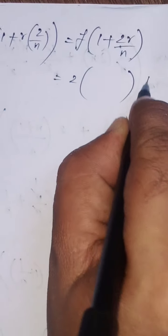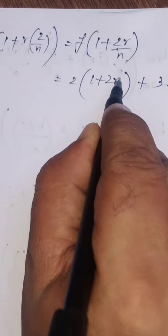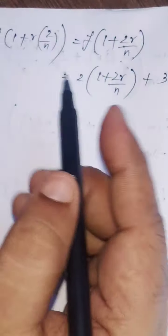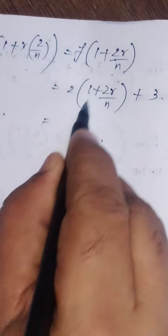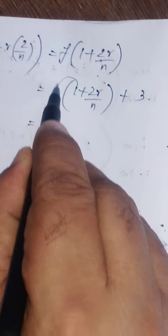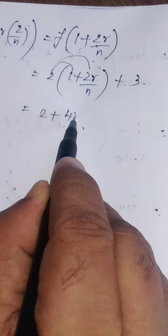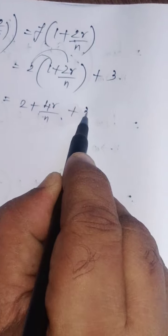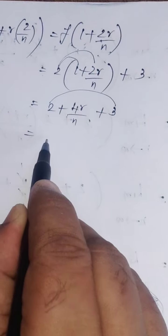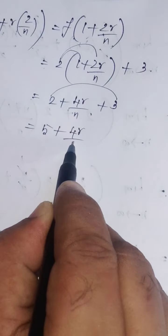So, f(1 + 2r/n) equals 2x + 3, where x equals 1 plus 2r by n. That gives 2 times 1 is 2, and 2 times 2r by n is 4r by n, plus 3. Adding together: 5 plus 4r by n.